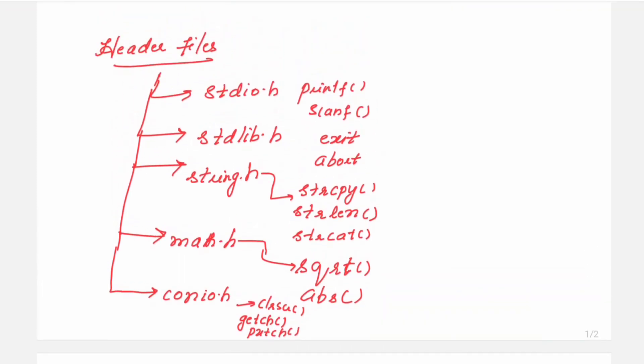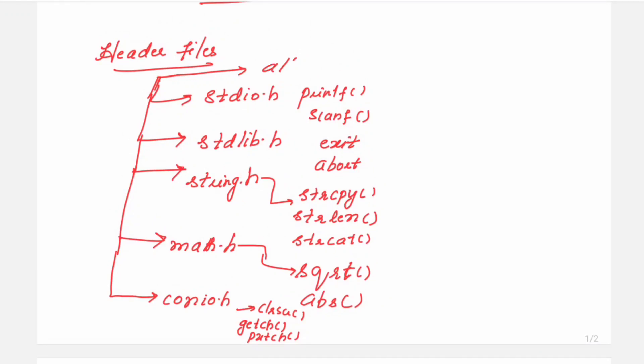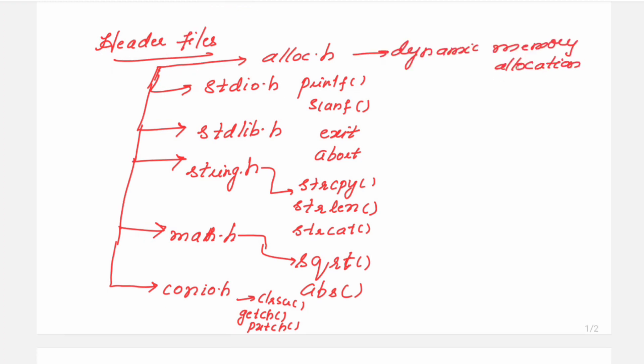Then you have one more type of header file. It is called as alloc.h. This is mainly used for dynamic memory allocation. So using the dynamic memory allocation, the size of the data structure can be changed during the runtime. Suppose if you are having in the program, you have declared the array size as, let me take one example, 9.